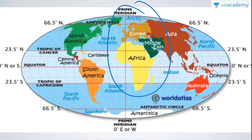People think that the USA is not crossed by the Tropic of Cancer, but that is wrong — because Hawaii, which is the 50th state of the USA, has the Tropic of Cancer passing very close to it. So just remember that the Tropic of Cancer does pass through the USA near Hawaii. The Equator goes through Africa, South America, and Asia.